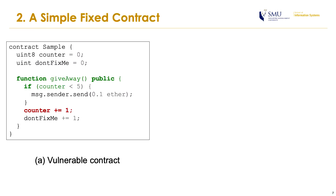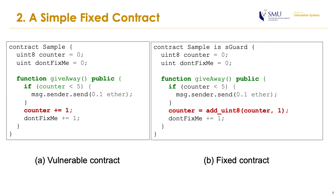The code on the left is a vulnerable smart contract designed to give 0.1 Ether to the first 5 persons who call the function giveaway. However, attackers can intentionally call giveaway more than 8 times to reset the variable counter to 0 and claim more Ether. This happens because the variable counter has type unsigned int8, which can only handle values from 0 to 7. On the right is the smart contract fixed by ESGARC. Basically, we wrap the assignment counter++ with a safe math function call for unsigned int8, which throws an error if an overflow occurs.